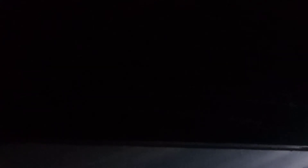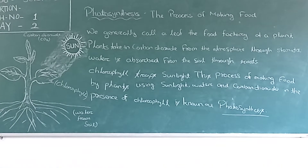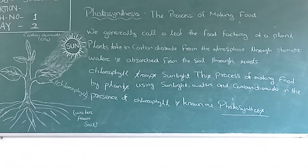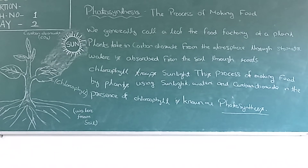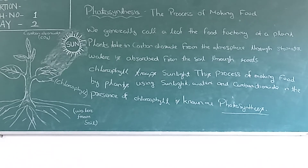Green plants use the sunlight energy to change water and carbon dioxide into oxygen and nutrients. This process of making food by plants using sunlight, water and carbon dioxide in the presence of chlorophyll is known as photosynthesis.